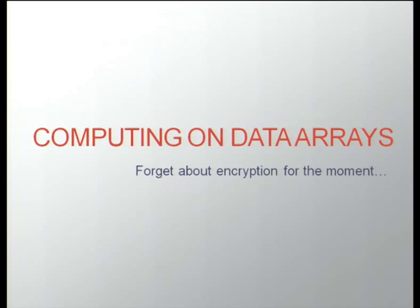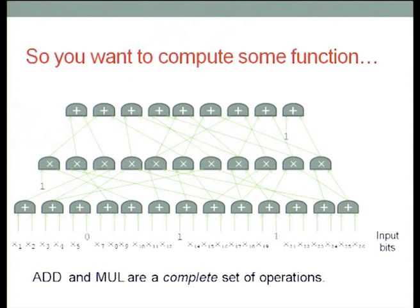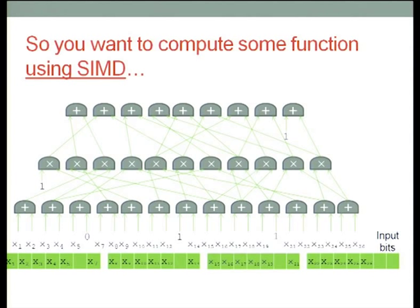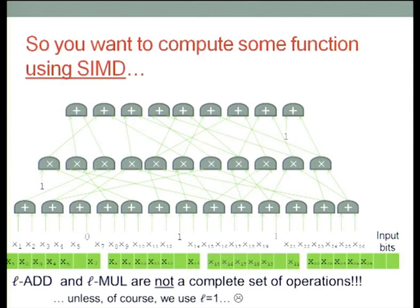Let's forget about encryption for a moment and just talk about how to compute on data arrays. When your input is presented as arrays, addition and multiplication is enough to encode any function — it's a complete set of operations. But when your input is packed in these arrays and the only operations are L-add and L-multiply doing pointwise addition and multiplication, it's not a complete set, because when I want to add X1 to X2, they belong to two different slots and there's no way they can interact. I need a way to move data around so elements can interact when I have array-wide operations.